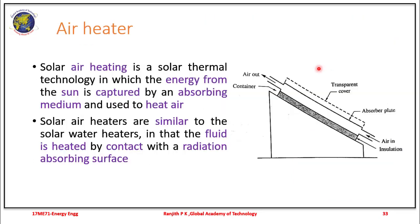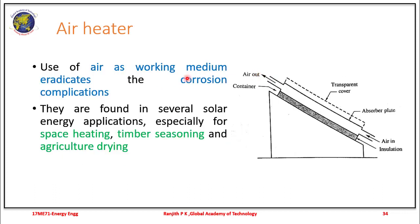Air heating is a solar thermal technology in which energy from the sun is captured by an absorbing medium and used to heat air. There is a transparent cover and an absorber — very similar to the solar water heater except the working fluid is air. As air passes through this collector, it gets heated and the hot air obtained can be used further. It finds application in space heating, agriculture drying, and timber seasoning. An advantage air heaters offer is that the working fluid eradicates issues of corrosion.